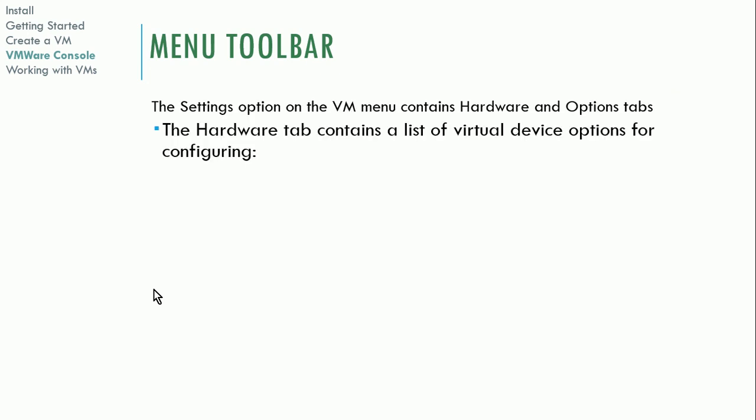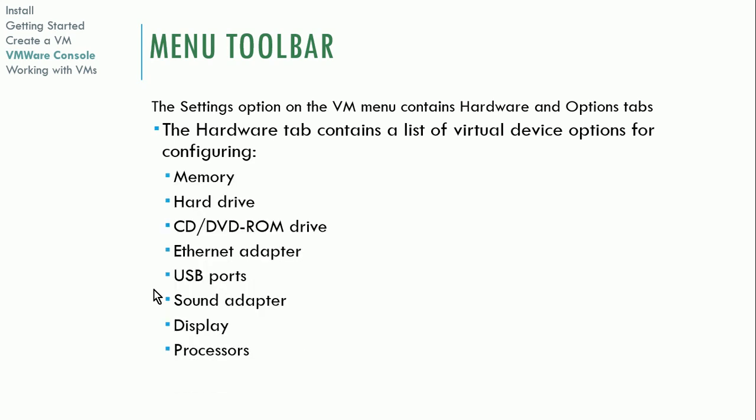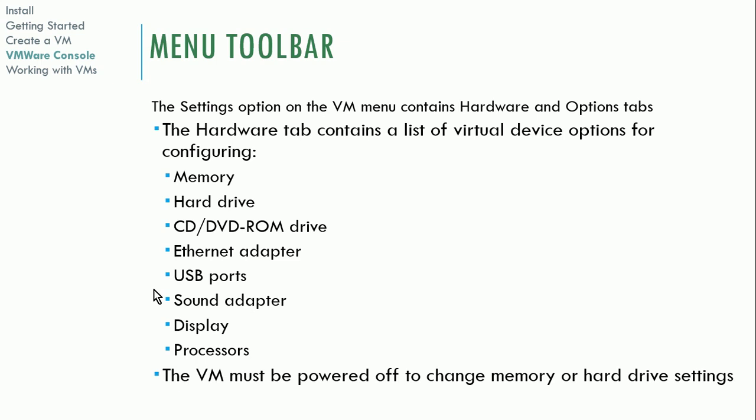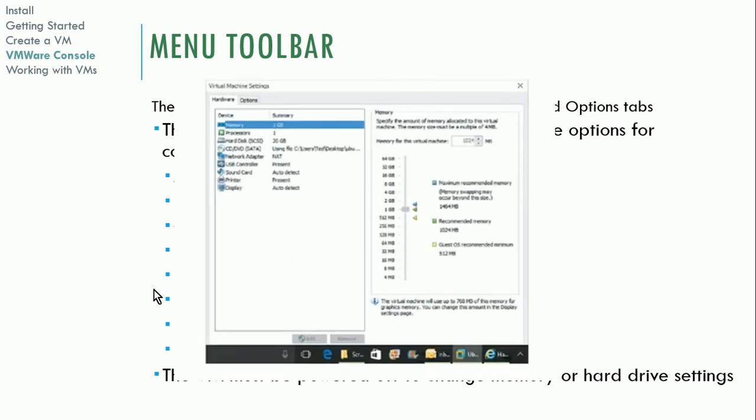In the settings option for the VM menu, there's a hardware tab with a list of virtual device options for configuring memory, hard drive, CD/DVD, and all peripheral devices. You can't edit many of these settings unless the workstation is powered off. With VMware Workstation, you can't change memory usage, number of processors, or hard disk space while the machine is on — those have to be managed when the machine is turned off. That is not necessarily true with some enterprise products, but it is a limitation of Workstation.